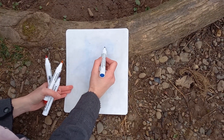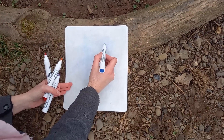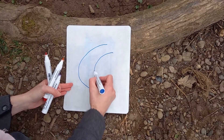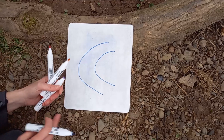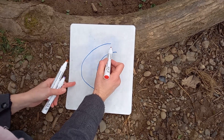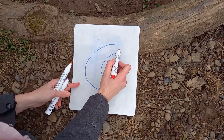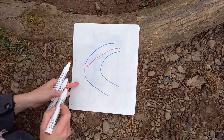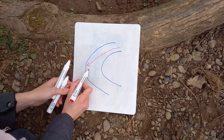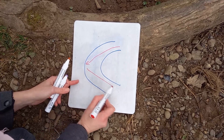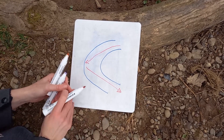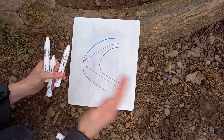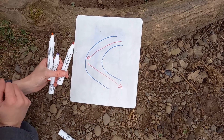So this erosion on the outside bank and deposition on the inside bank continues, and the curve gets more and more exaggerated, because the deeper, fastest water — shown by my red line here, called the thalweg — flows from outside bank to outside bank, zigzagging across the river. This is meandering lateral erosion — sideways erosion.